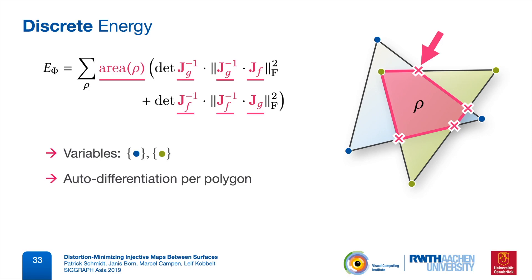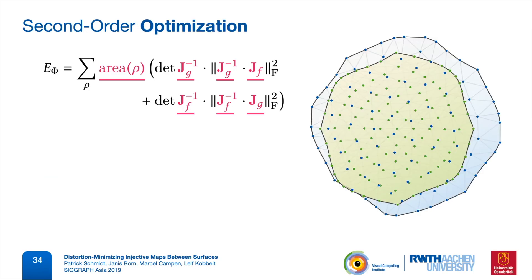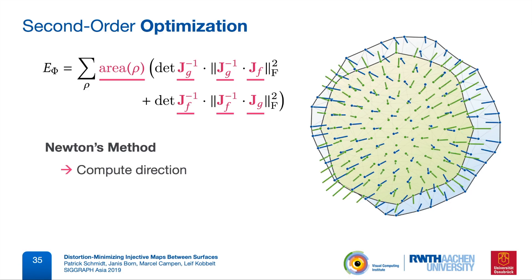Before we start optimizing, we still have to add a few more terms to the objective for regularization, for injectivity barriers, or to incorporate landmark constraints, but there's nothing really surprising here and I refer you to the paper for the details. Important for us is that we manage to stay within the realm of unconstrained nonlinear optimization. As an optimization algorithm, we start with Newton's method and then later add a few modifications.